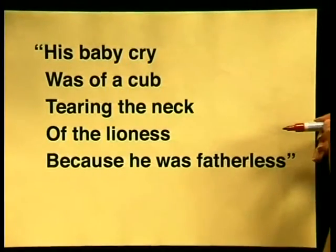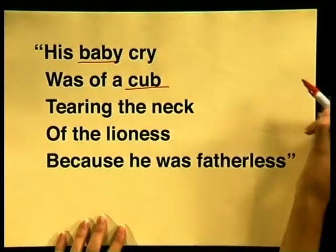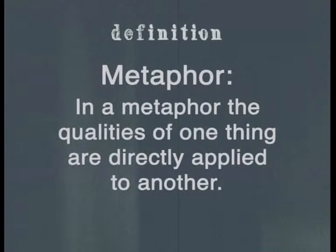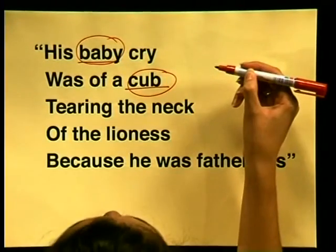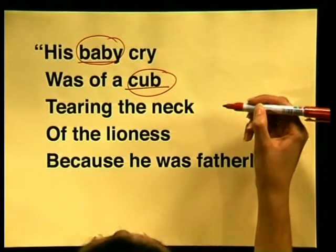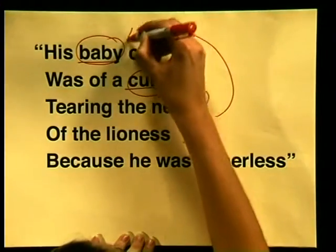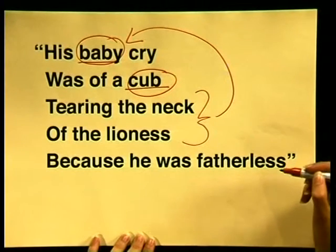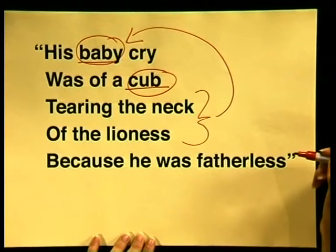What two things are being compared here? Well, the baby Shaka is being compared to a lion cub. So can you see the metaphor in Mtsali's lines? In a metaphor, the qualities of one thing are directly applied to another. It is as though the baby and the cub become the same thing — the cry of the baby is exactly the same as the cry of the lion cub, and the qualities of the lion cub are transferred to the baby. So the strength and ferocity of the lion become the description of the baby and his strong, ferocious cry, blaming his mother for his lack of a father.